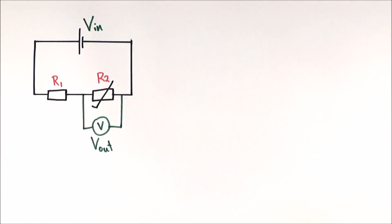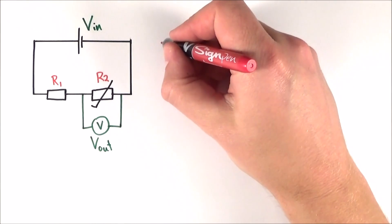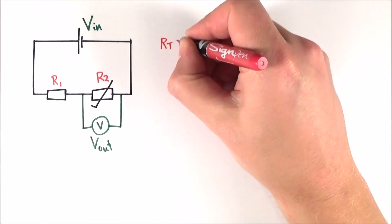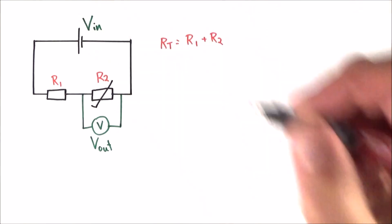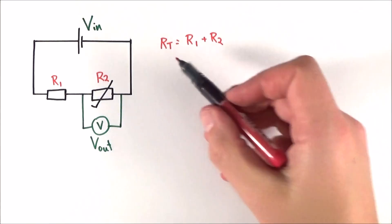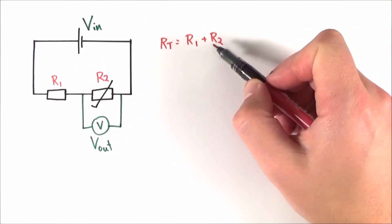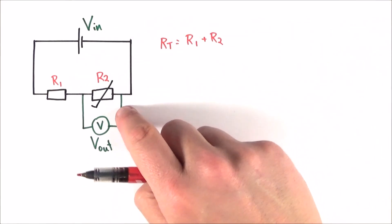If we think back to the total resistance of these two resistors, we could say that for the circuit RT is going to be equal to R1 plus R2. Now, the important thing to realize here is that R1 is going to be a fixed value, but R2 is going to change depending upon the temperature.